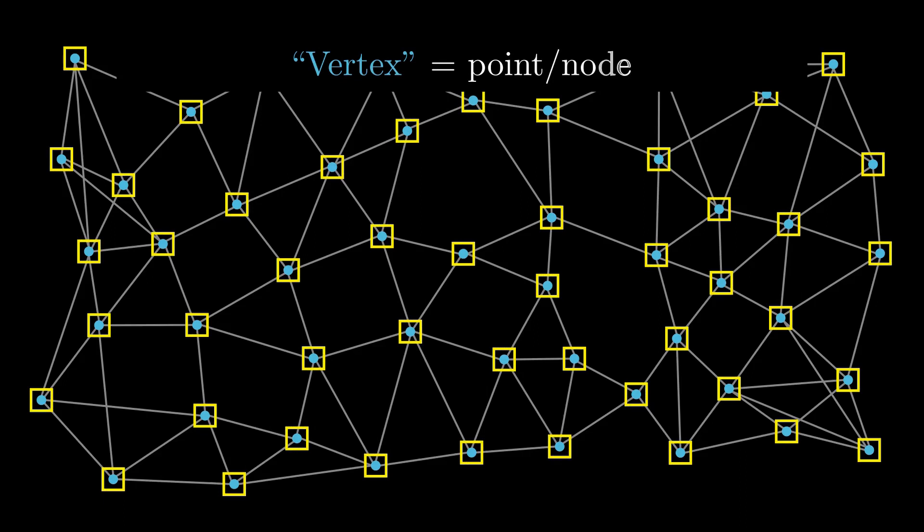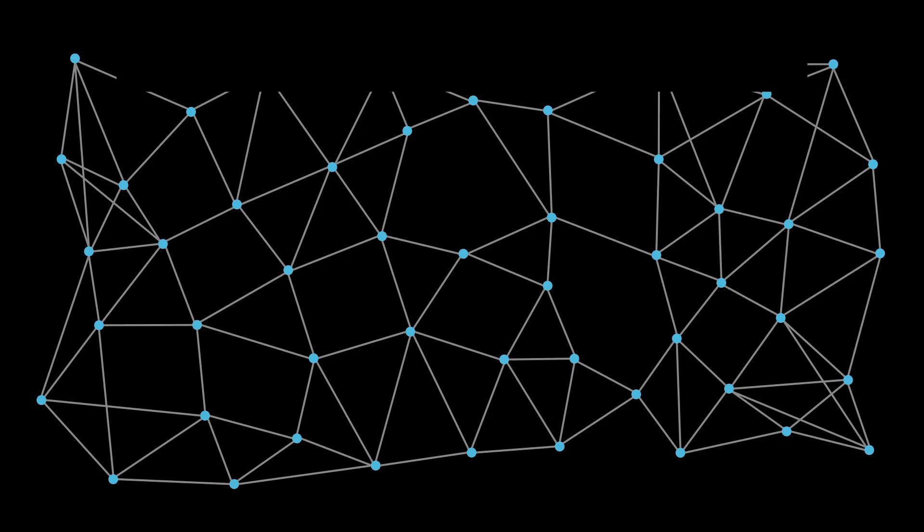Each of the point or node is called a vertex and each of the connecting line is called an edge.